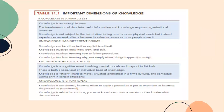We will know about the four important dimensions of knowledge. The first is: knowledge is a firm asset — it is an intangible asset. The transformation of data into useful information and knowledge requires organizational resources. Knowledge is not subject to the law of diminishing returns as physical assets, but instead experiences network effects because it increases as more people share it. The second is: knowledge has different forms. Knowledge can be either tacit or explicit. It involves know-how, craft, and skill, knowing how to follow procedures, and knowing why — not simply when — things happen.